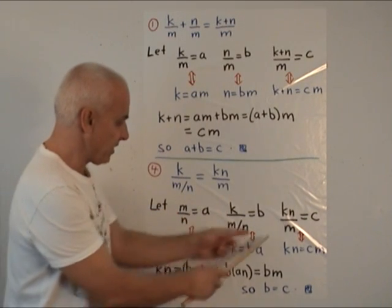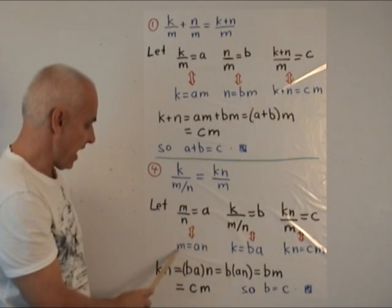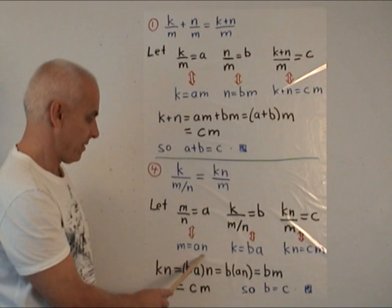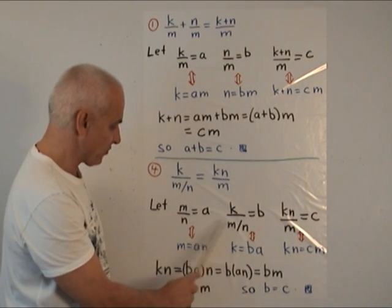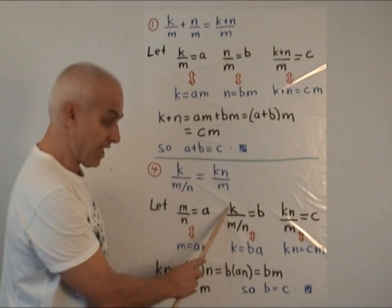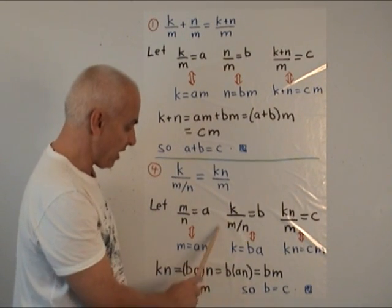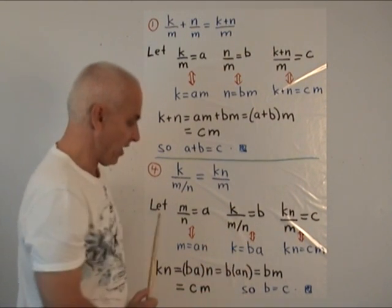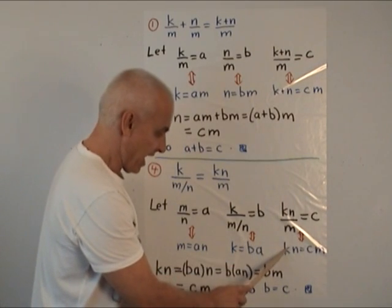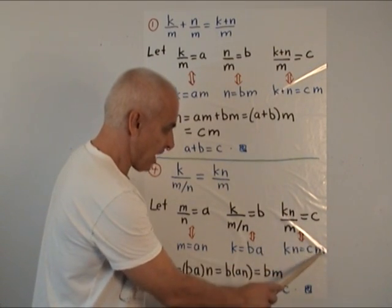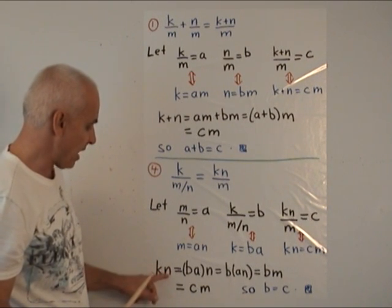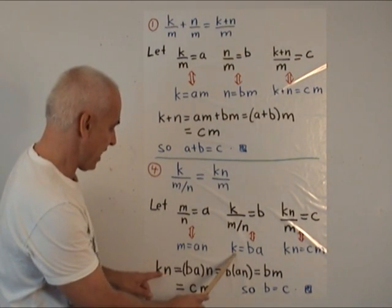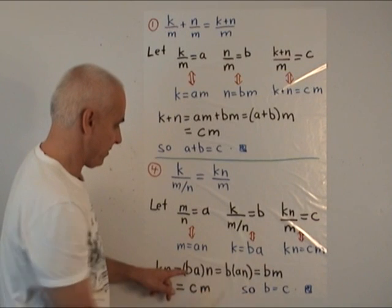And now we unravel what these three things mean. This means that m equals a times n. This means, first of all, note that m divided by n is really a. So this is really k divided by a equals b. And we unravel it to say k equals b times a. And this tells us that k times n equals c times m. Now we're going to look at k times n from here. So here's k, and we're going to multiply it by n. B, A, n.